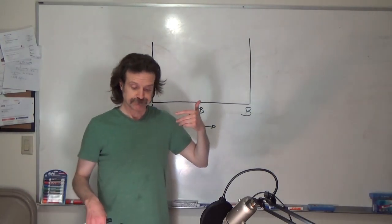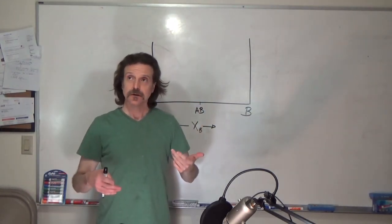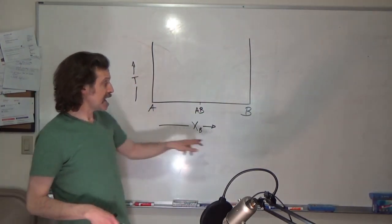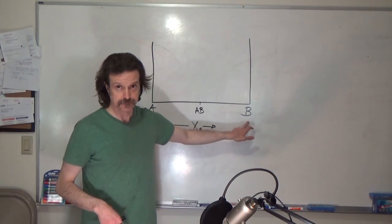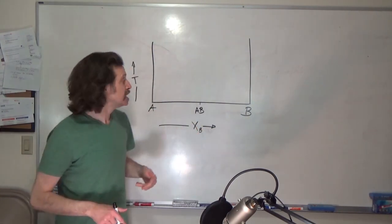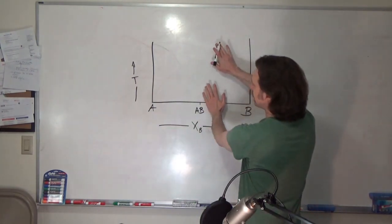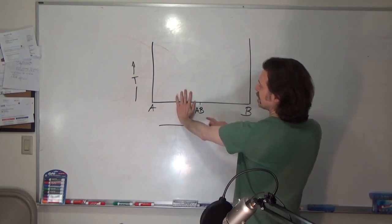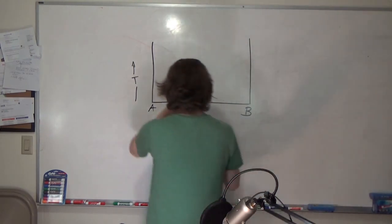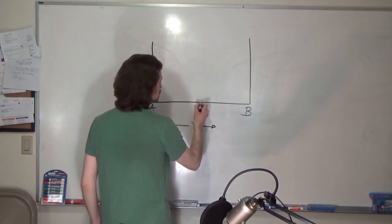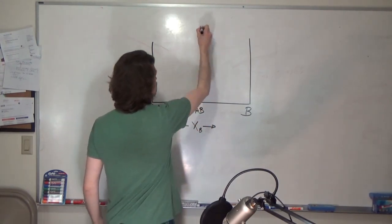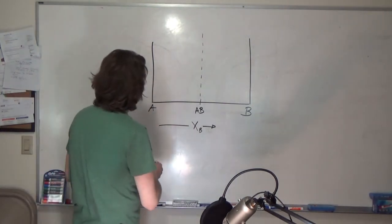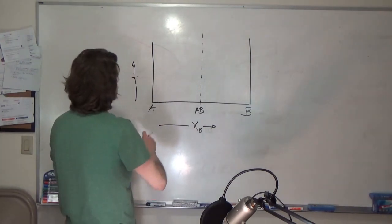This stoichiometric compound AB has a unique crystal structure and behavior that is different from A and B. As a result, you could talk about a phase diagram from A to AB, and you could talk about a phase diagram from AB to B. Let me draw a dashed line so we can imagine such a division.